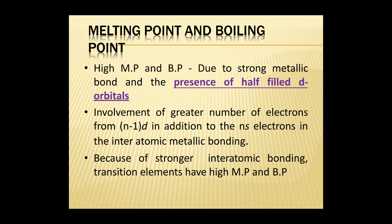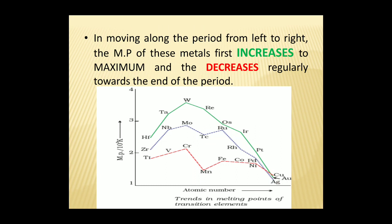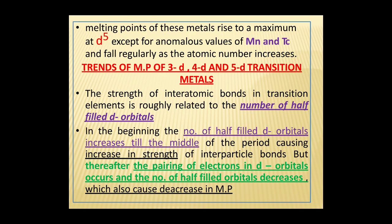The involvement of a greater number of electrons from (n−1)d, in addition to the ns electrons, in the inter-atomic metallic bonding causes transition elements to have high melting and boiling points. Moving along the period from left to right, the melting points of these metals first increase to a maximum and then decrease regularly towards the end of the period. The melting point rises to a maximum at d5, except for the anomalous value of manganese, and falls regularly as atomic number increases.